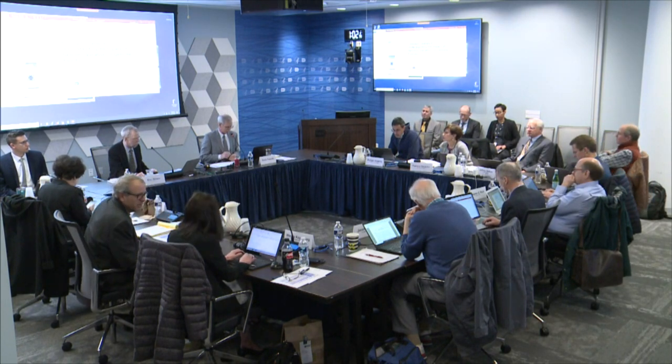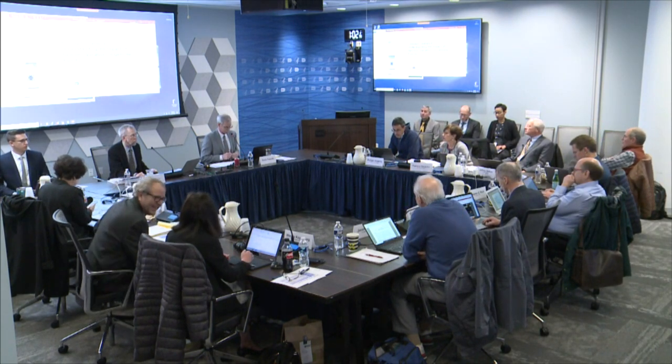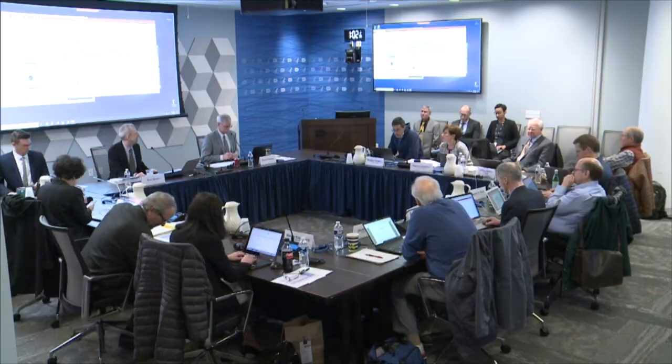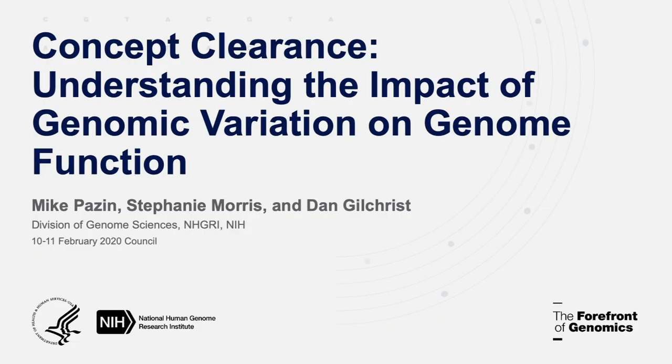We're going to hear a presentation from two members of the staff for the first concept. We encourage discussion and lots of questions from council. At the end of the discussion, I will ask to take a vote to approve the concept. The first concept is titled Consortium for Understanding the Impact of Genomic Variation on Genomic Function.